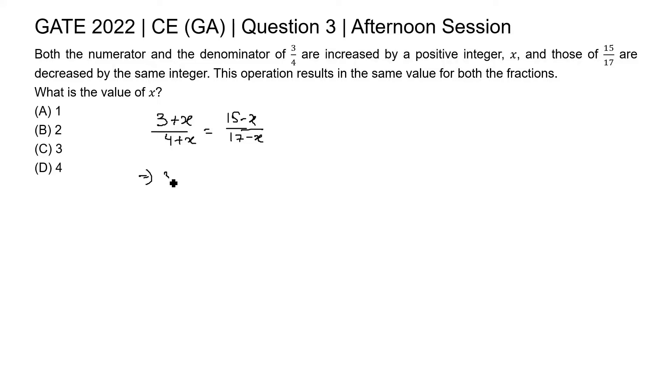Further this equation can be rewritten as 3 plus x into 17 minus x is equal to 15 minus x into 4 plus x.